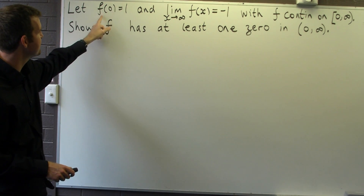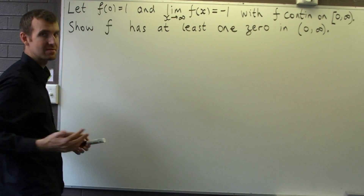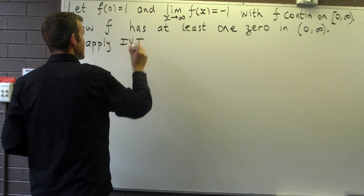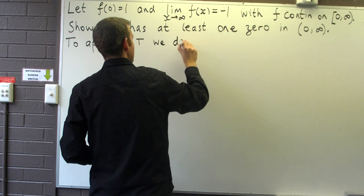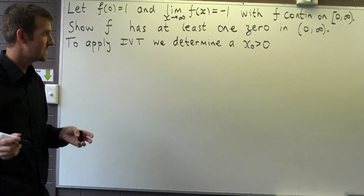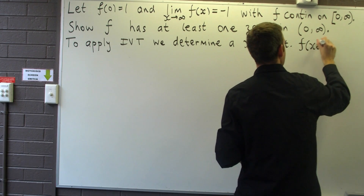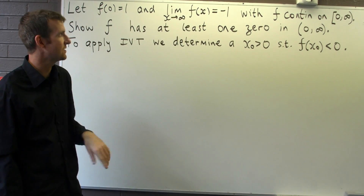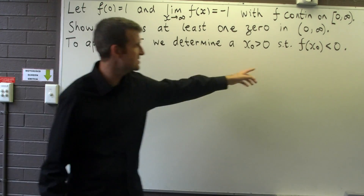We know that f of 0 equals 1 — it's positive. What we have to do is find another point greater than 0 where f is negative. So our idea is to apply the IVT. All the conditions are satisfied except the following: we want to determine a point x₀ that lies to the right of 0 such that f of x₀ is negative. Does there exist such a point? Well, you might think that's obvious — f is continuous, the limit goes to some negative number — so this is obvious. Well, let's prove it.